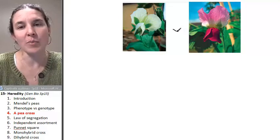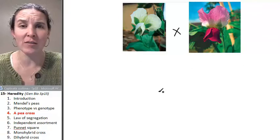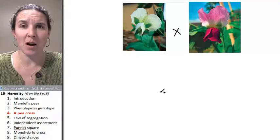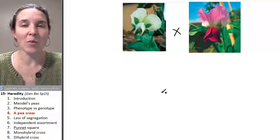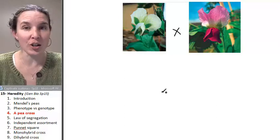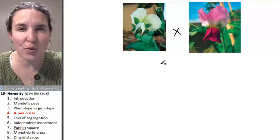Essentially, he took two parents and he crossed them, and he had the magic of botany knowledge, and he could make it so that, number one, he could ensure that each line of plants was a true breeding line.